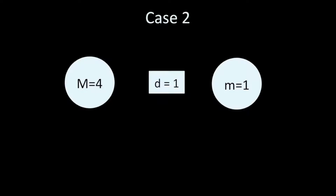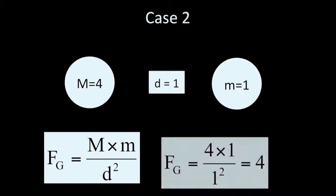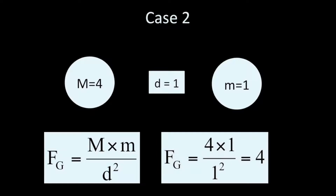We can change it up a little bit. What if we increase the mass of one of the objects by four times? So the first mass is four, the distance remains one, and the second mass is also one. Using Newton's gravity equation, we get four times one divided by one squared — that's four over one, which is four. Increasing the mass of any of the objects will increase the force of gravity between them.